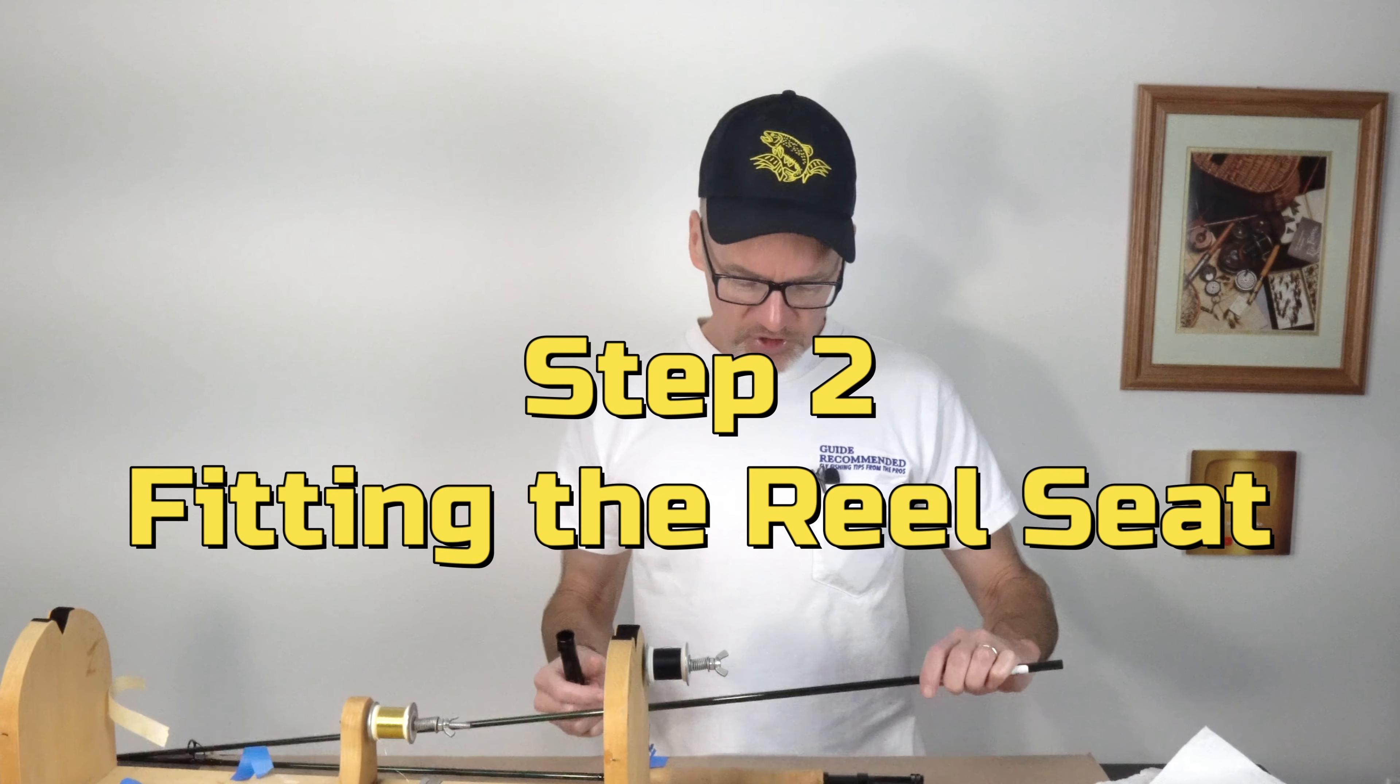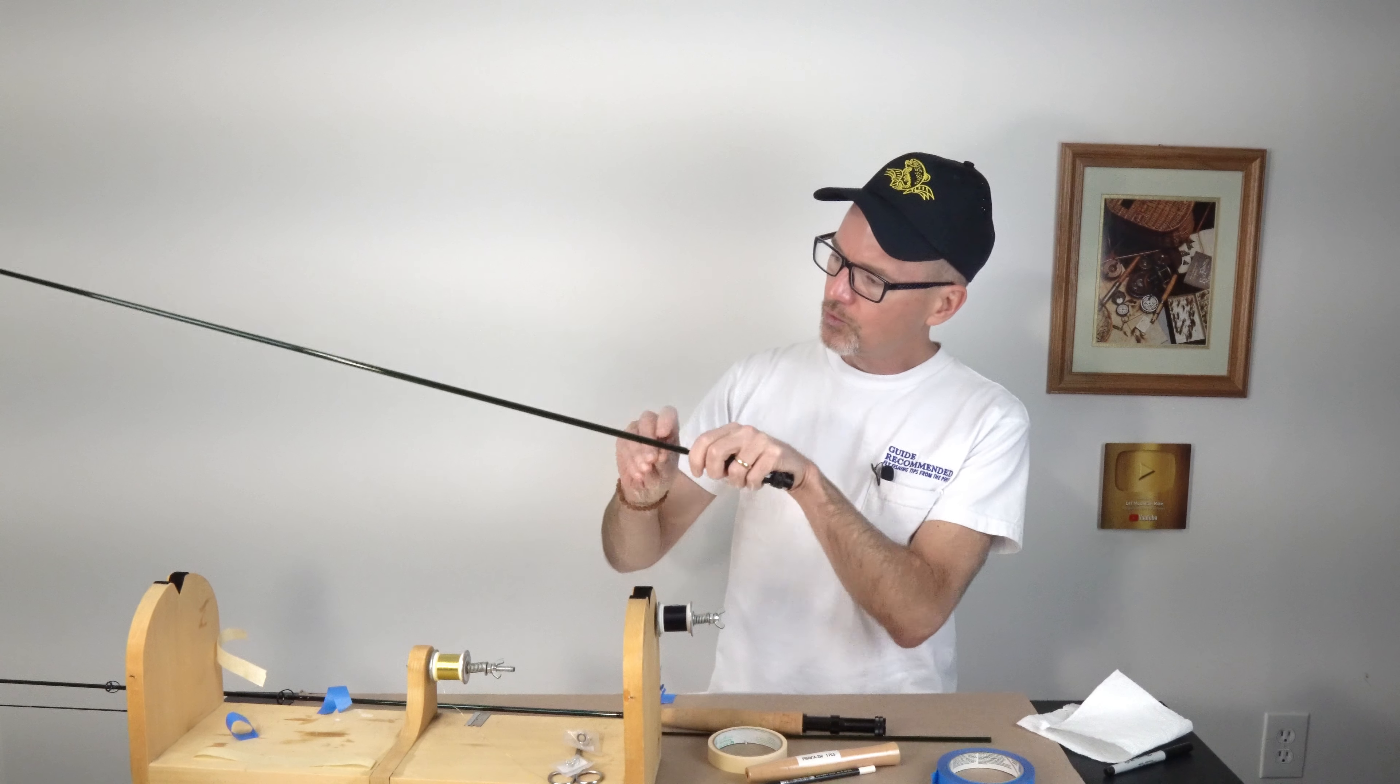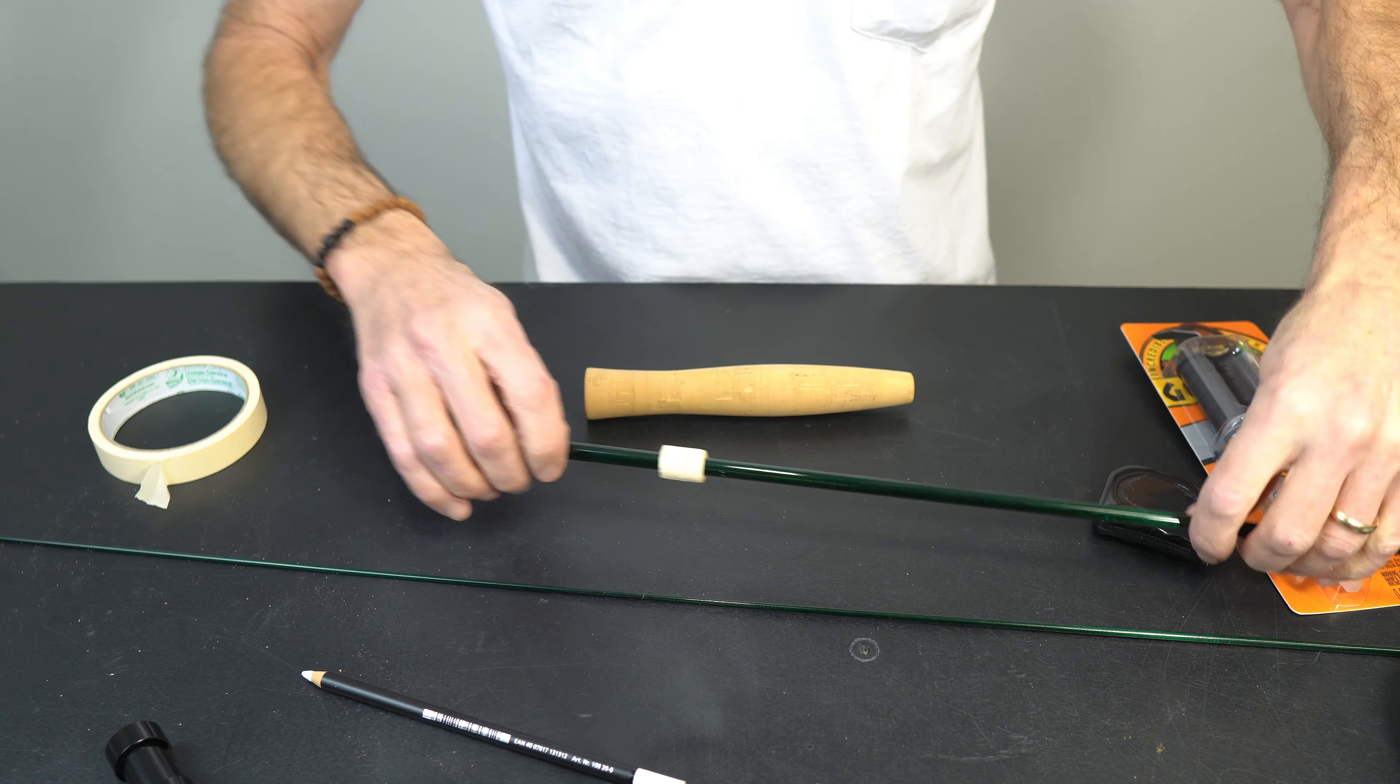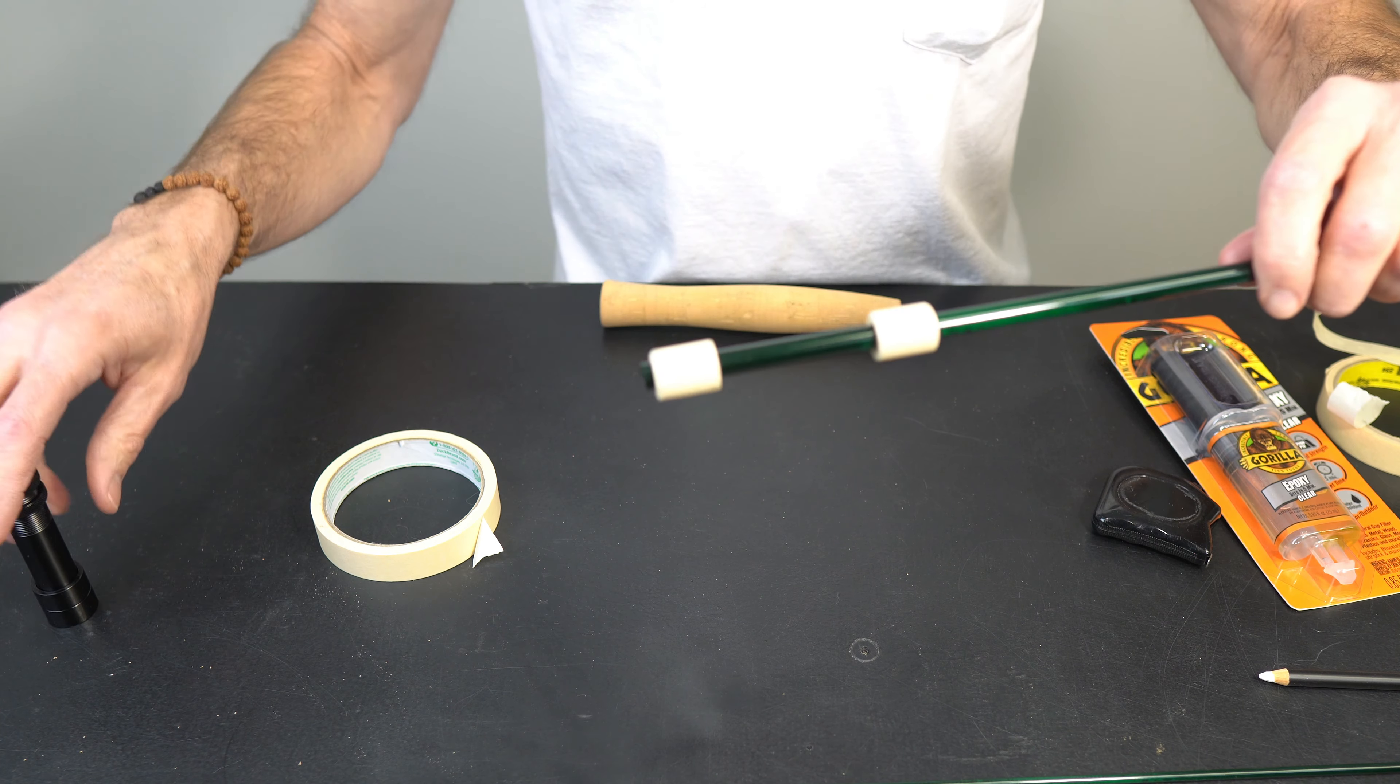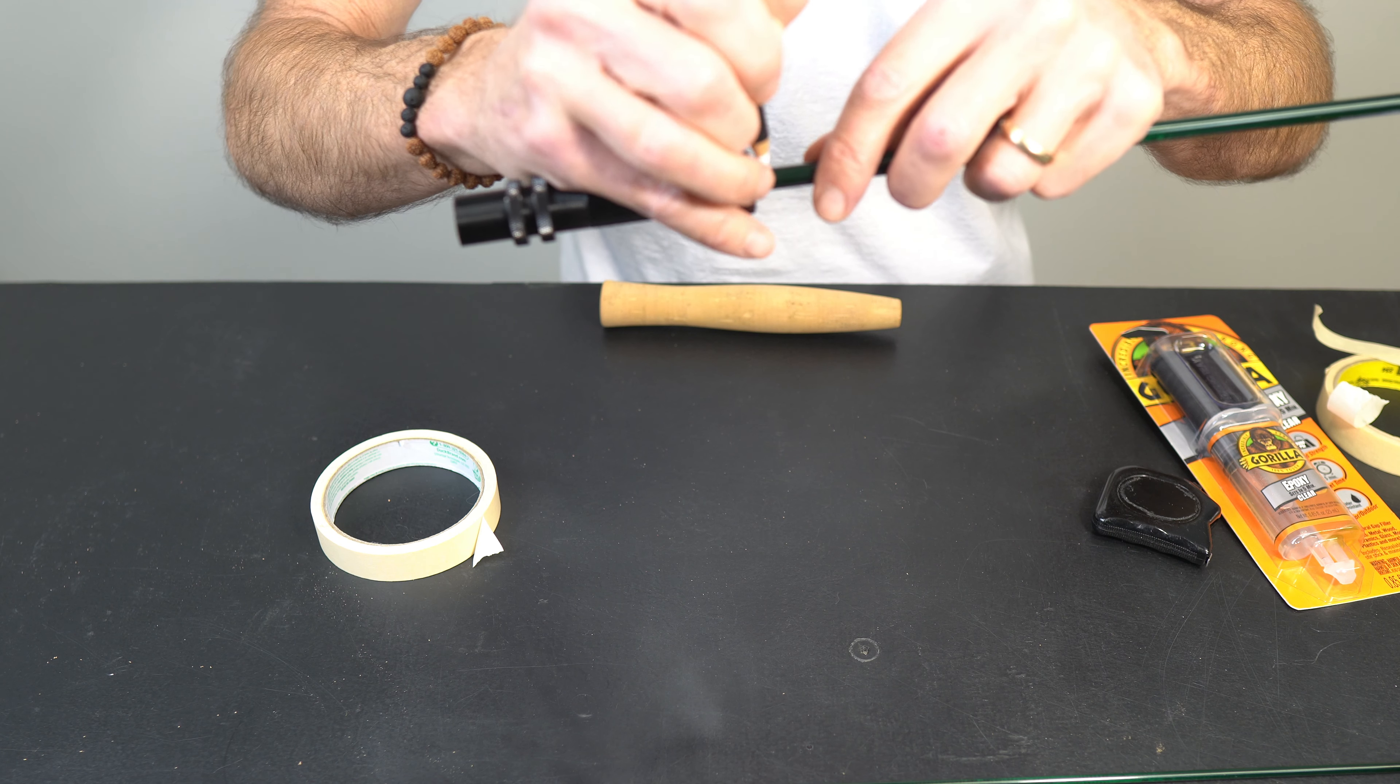Step two is mounting your reel seat. You're going to build up a masking tape bushing on the base of the rod and then you're going to align your hood with the spine of the fly rod. There it is, our reel seat fits on there. We're going to remark the end because of all my rubbing. That's just to remind me where to stop putting the glue on, that little mark there.